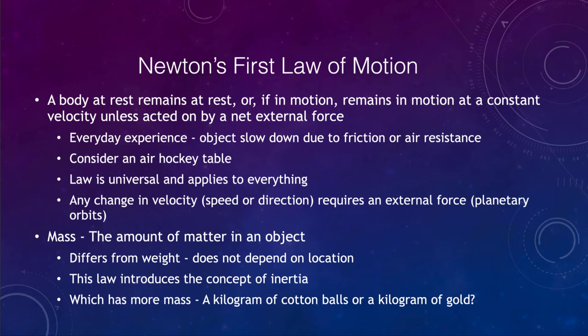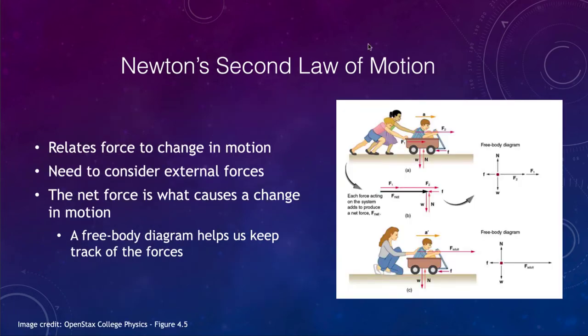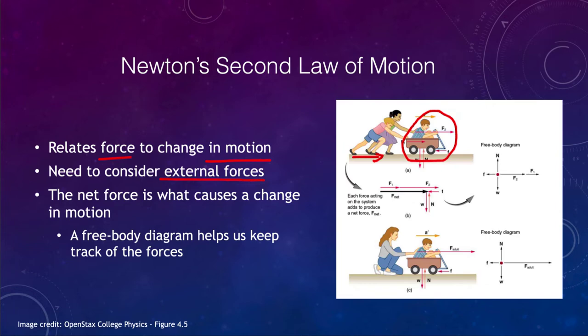Let's move on and look at Newton's second law, which relates force to the change in motion. We have to consider what the external forces acting on the system are, and we actually have to define what our system is. If the system is the child in the wagon being pushed, then the people pushing on it would be providing an external force. The net force is what causes the change in motion. If forces are balanced and equal and opposite, then there is no change in motion.